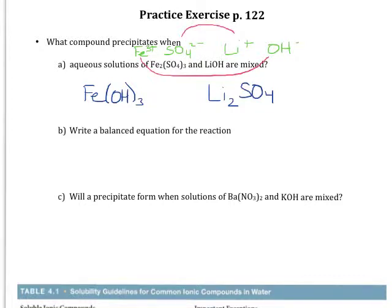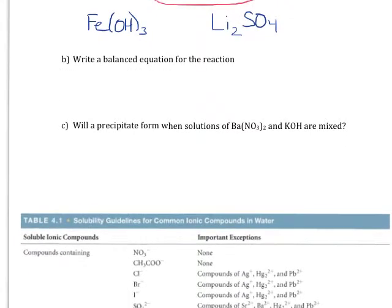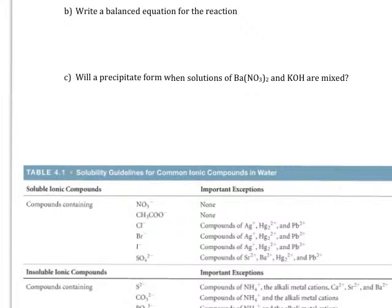Now the question actually asks me what compound precipitates. So I need to use my solubility guidelines in order to figure out what's going to precipitate. I've got a hydroxide anion and I've got a sulfate anion. First thing we come to in the chart is the sulfate ion.